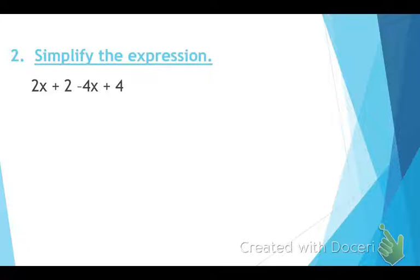All right, so for number two, you guys are going to go ahead and simplify this expression. Remember to circle and underline your like terms. All right, so for those of you, as you underlined and circled, you circled the constants, the numbers that stand alone, and then you underlined the like terms, 2x minus 4x.